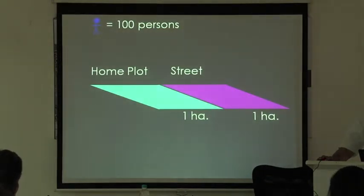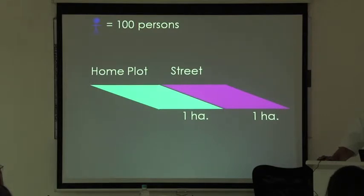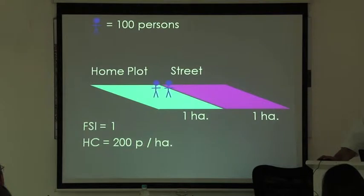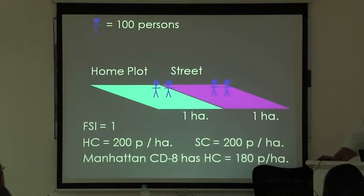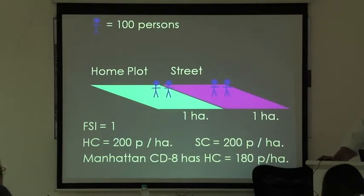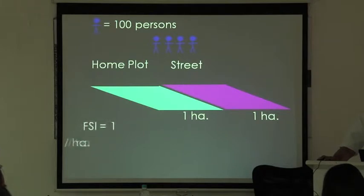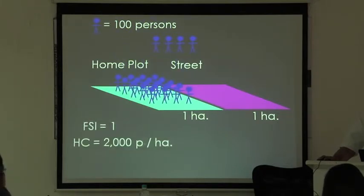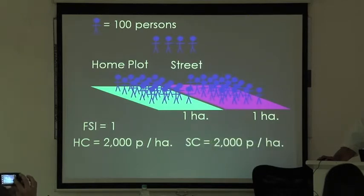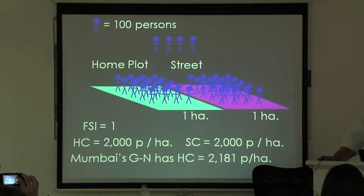Let me illustrate this formula carefully. If you have a home plot of one hectare and a street plot of one hectare, with FSI 1 and home crowding of 200 persons per hectare, then street crowding will also be 200 persons per hectare — and Manhattan CD8 has home crowding of 180 persons per hectare, so this is roughly representative of Manhattan. With FSI 1 but home crowding of 2,000 persons per hectare, you get street crowding of 2,000 — and Mumbai's G North has home crowding of 2,181 persons per hectare, so this image represents Mumbai.